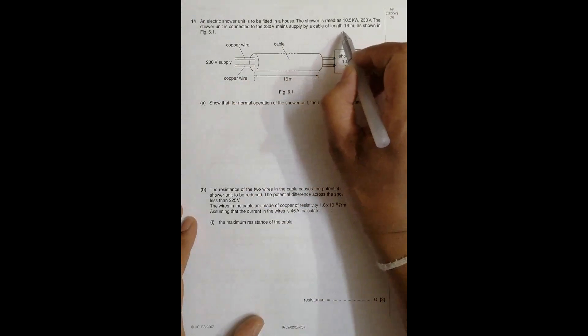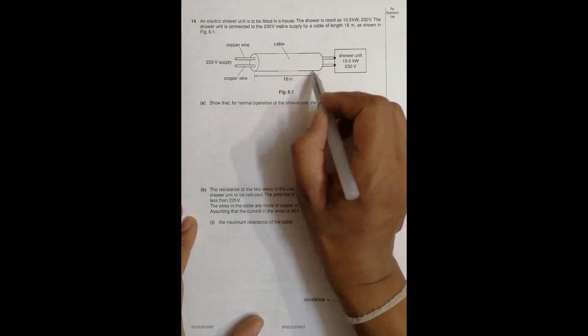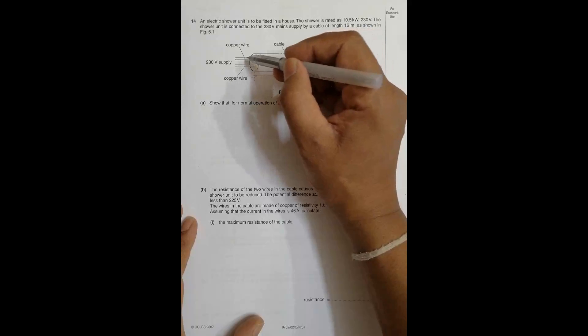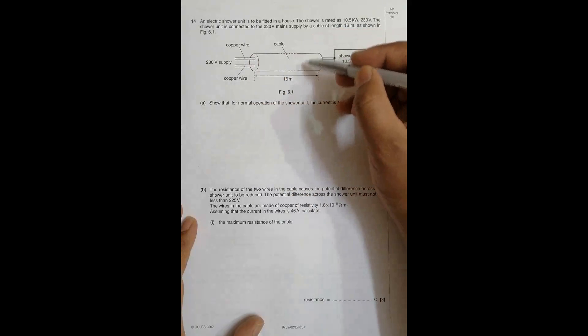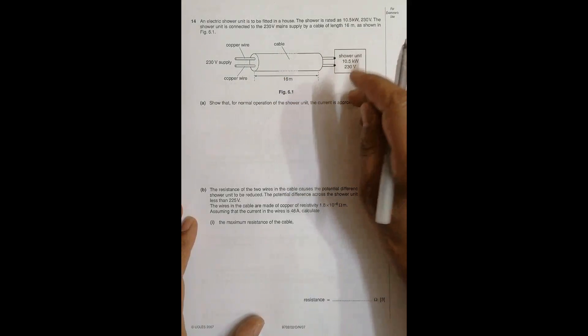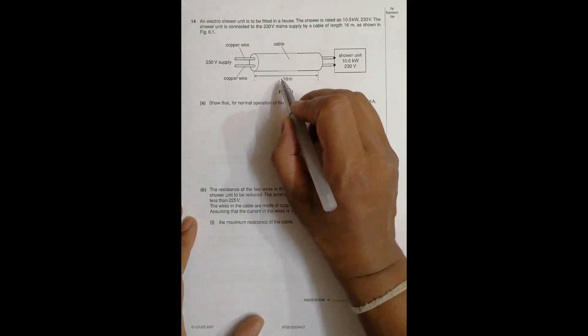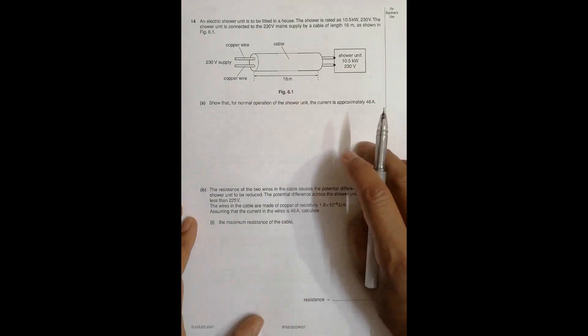The shower unit is connected to a 230 volt main supply by a cable of length 16 meters, which has two copper wires. This is the internal structure, and for ease they have constructed the 16 meters into this small length.